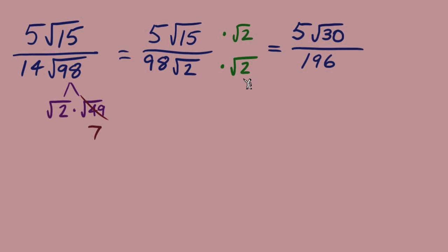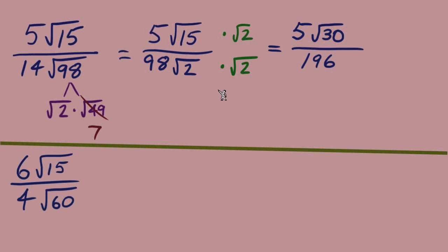In the denominator, radical 2 times radical 2 becomes just 2 outside the radical, and 2 times 98 gives 196. Remember, two identical radicals multiplied together give that number outside the radical — so we have 98 times 2 equals 196. Then we check: can we simplify 5 over 196? No. Can we simplify radical 30 further? No. So we're done with that example.